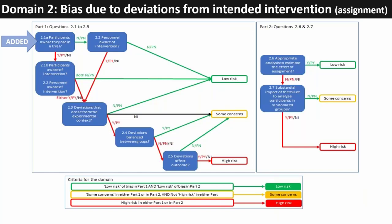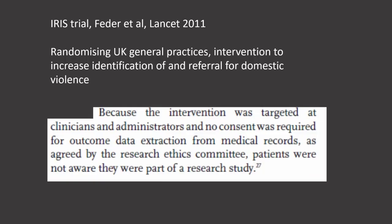Moving on to domain two — bias due to deviations from the intended intervention — I'll only be discussing the case where our effect of interest is the effect of assignment to the intervention, not the effect of adhering to the intervention. We've added just one question at the front of this domain: 'Are participants aware that they're in a trial?' The reason for adding this question is that in some trials, participants are not even aware that they are in a trial.